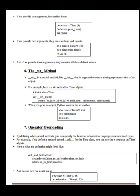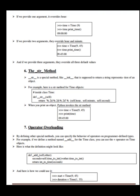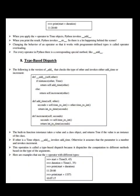The str method. __str__ is a special method like __init__ that is supposed to return a string representation of an object. Here is a __str__ method for the time object. When you print an object, Python invokes the __str__ method. Now let us see operator overloading. By defining other special methods, you can specify the behavior of operators on programmer-defined types. For example, if we define a method named __add__ for the Time class, you can use the plus operator on time objects. When you apply the plus operator to time objects, Python invokes __add__. When you print the result, Python invokes __str__. So there is a lot happening behind the scenes.